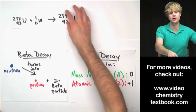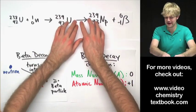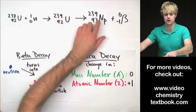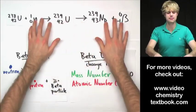So this guy here, Uranium-239, undergoes beta decay. And that gives us Neptunium, which has an atomic number of 93, as well as a beta particle.